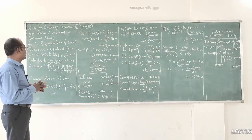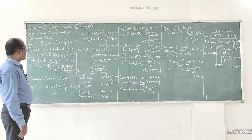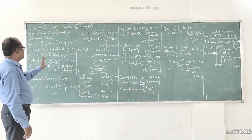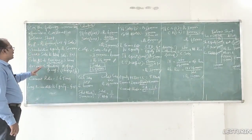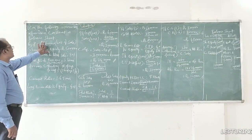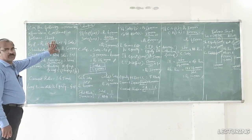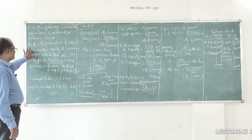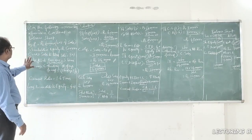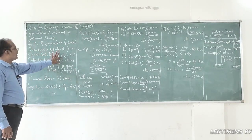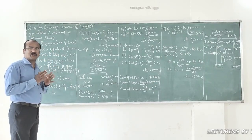Let us get into the problem: using the following accounting information, construct a balance sheet. The information provided in the problem are: gross profit six lakh rupees, which stands for 20 percent of sales; shareholders equity amounted five lakh rupees; credit sales to total sales eighty percent.